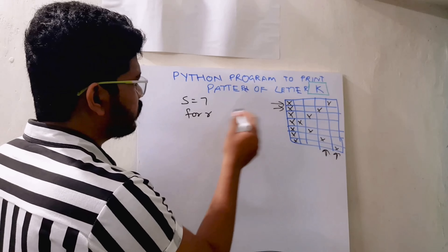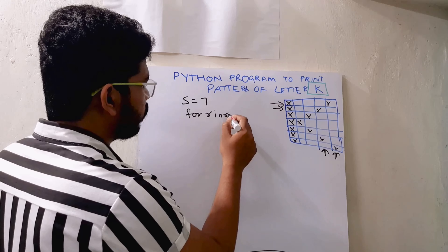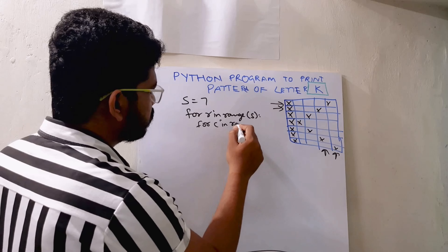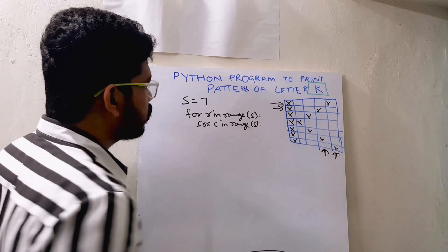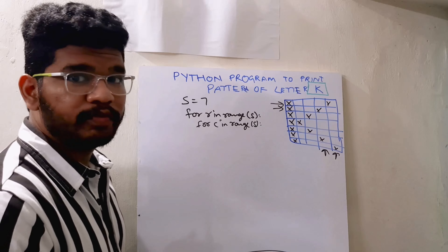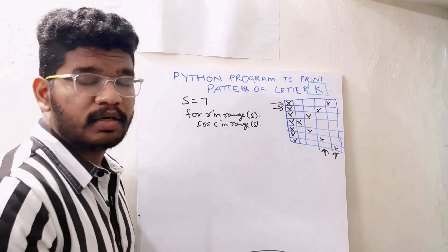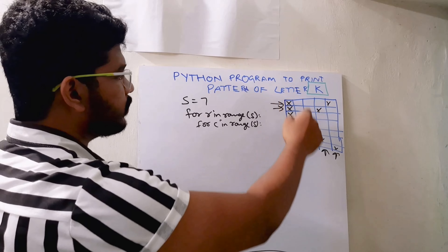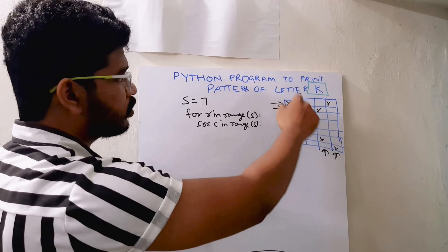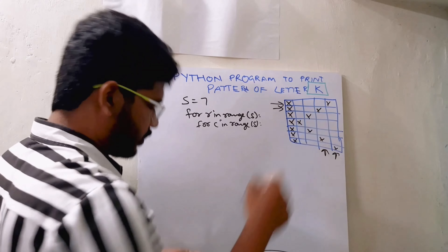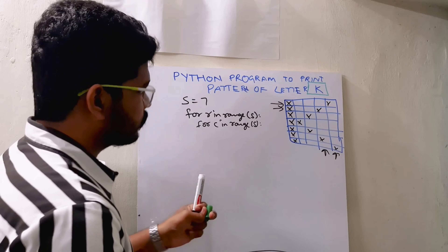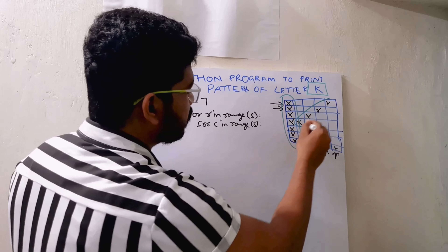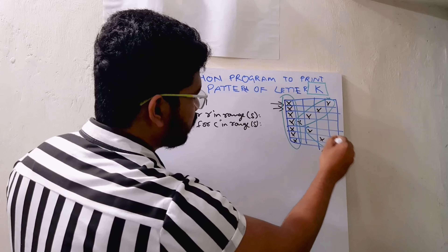We write two loops: for r (row) in range, and for c (column) in range s. So two for loops — one for row looping and one for column looping. Here I need to print conditions: where to print stars and where to print spaces. One condition is for the first column, printing the second part is another condition, and printing the third part is another condition. So there are three conditions.